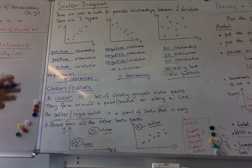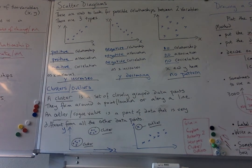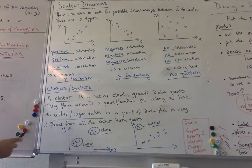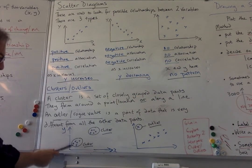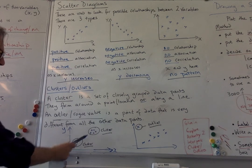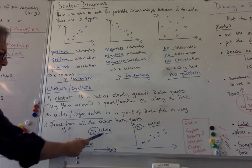So a cluster is when you get a set of closely grouped data points and they either form around a point or a location or they can be also along a line. So here I did a little example. So as you can see there's a group of points here there's a group of points there so they're grouping around a point or in an area together and they do look quite separate. So these are what we call clusters.